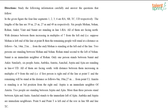Six people — Mohan, Sohan, Rohan, Ankit, Vineet, and Sumit — are standing in line 1, that is RA. All of them are facing north, with the distance between them increasing in multiples of 7 from the left end. That is, if Mohan is at the left end at point R, the remaining people stand at distances of 7 meters, 14 meters, 21 meters, etc. from that end.